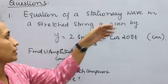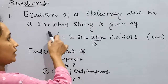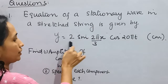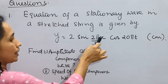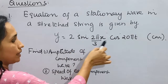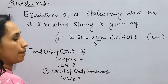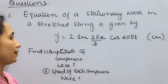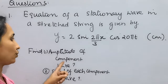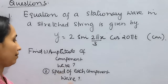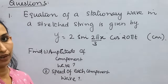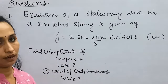Equation of a stationary wave in a stretched string is given by y = 2 sin(2πx/3) cos(25t) in cm. Find the amplitude of each component wave and speed of each component wave.